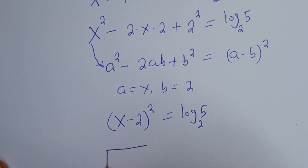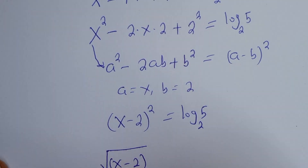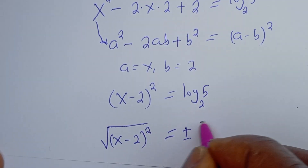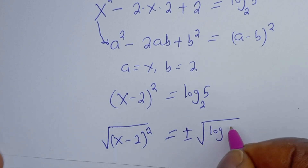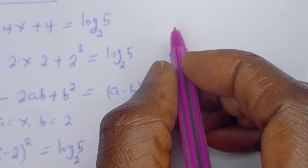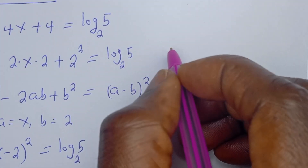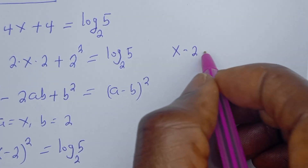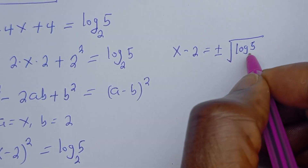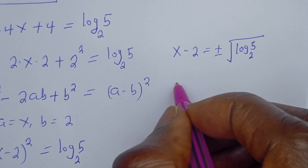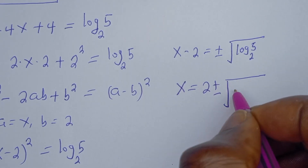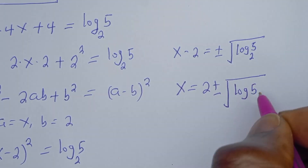Therefore, s minus 2, all squared, is equal to log 5 base 2. Taking the square root of both sides, the square root of s minus 2 all squared gives s minus 2, and the right side becomes plus or minus the square root of log 5 base 2. Therefore, s is equal to 2 plus or minus the square root of log base 2 of 5.